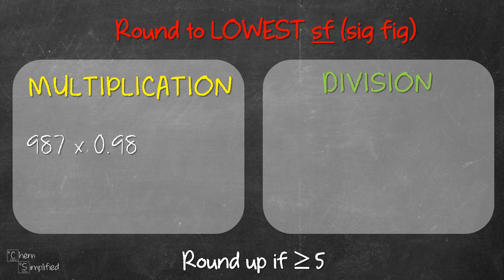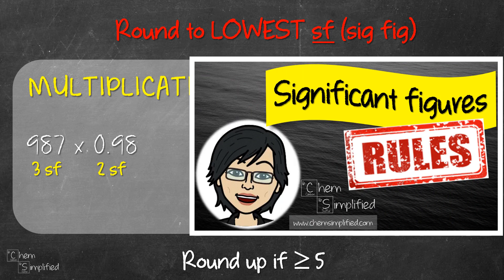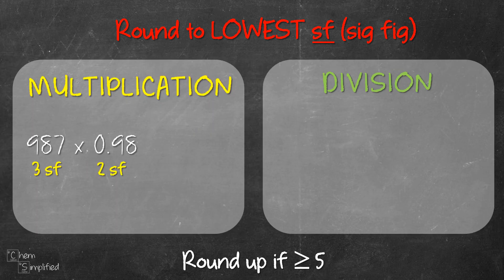Since we need to round off to the lowest sig fig, we need to figure out the sig fig for each number. 987 has 3 sig figs, and 0.98 has 2 sig figs. If you need a refresher on figuring out sig figs, I'll link the intro video in the description box below. The rule for multiplication is to round off following the lowest sig fig. In our case, between 2 sig figs and 3 sig figs, 2 is the lowest, so our answer is going to be presented in 2 sig figs.